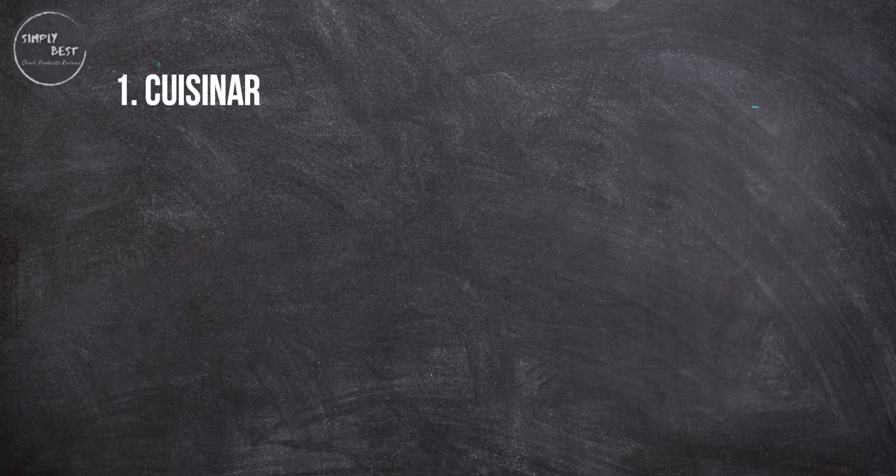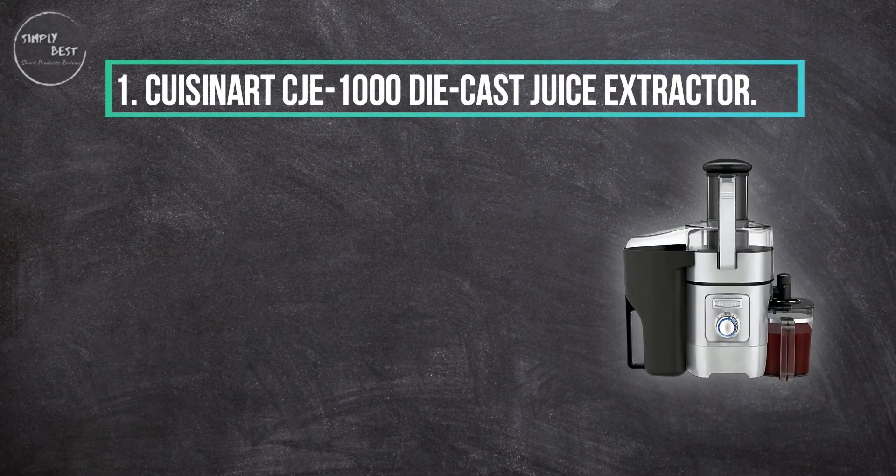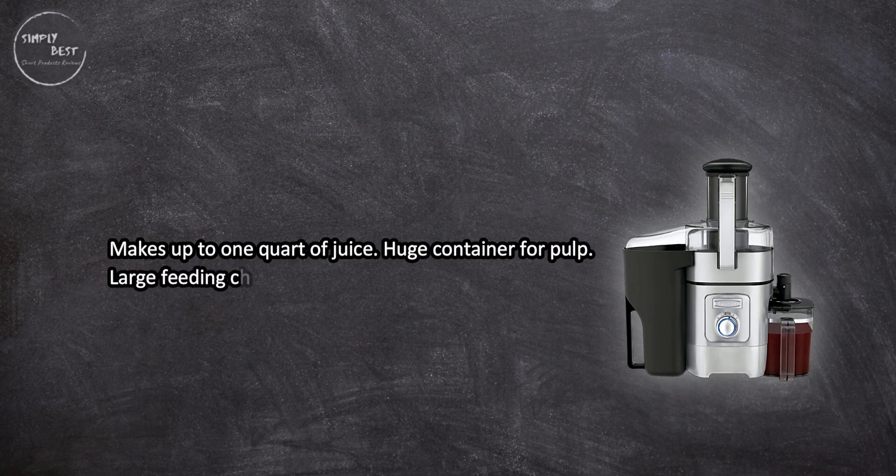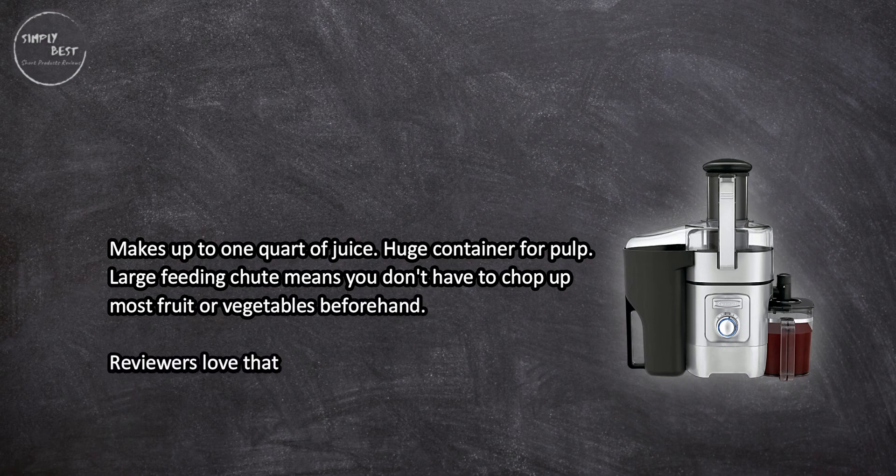At number one, Cuisinart CJ-1000 Die-Cast Juice Extractor. Makes up to one quart of juice. Huge container for pulp. Large feeding chute means you don't have to chop up most fruit or vegetables beforehand. Reviewers love that you can feed it whole apples, carrots, and oranges.